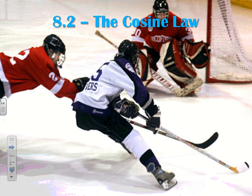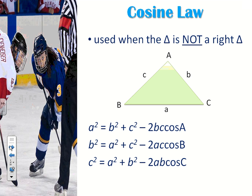The second trigonometric law is the cosine law. We use the cosine law when we don't have a right angle triangle. When we do have a right angle triangle, that's when we use SOH CAH TOA. So we use the two laws when we don't have right angle triangles. When do you know to use sine law versus cosine law? You use sine law when you have partners, but when you have no way to get those partners, that's when you use the cosine law.